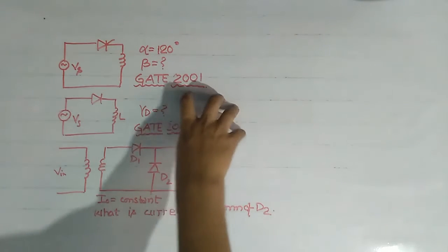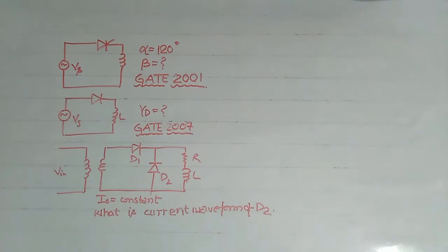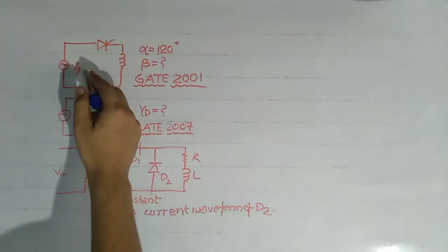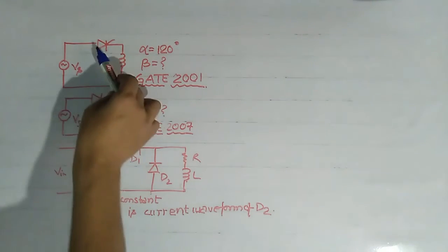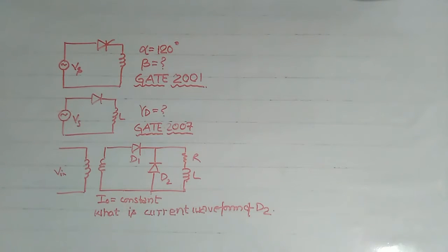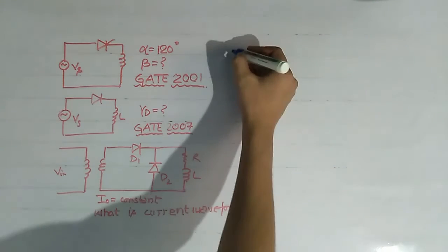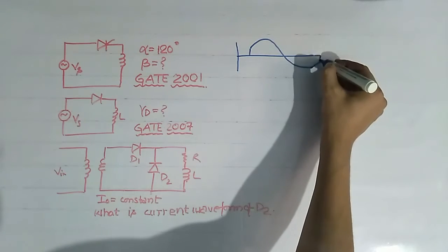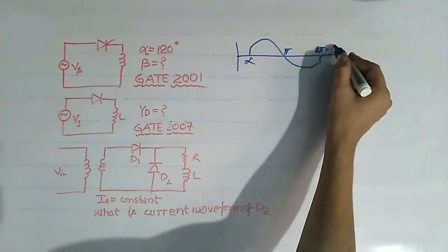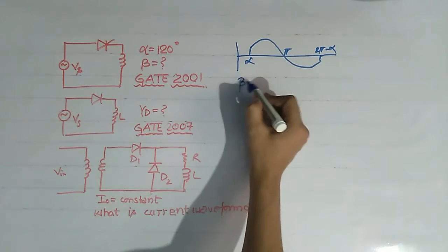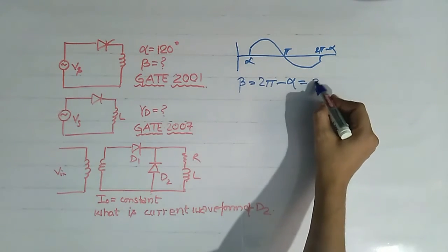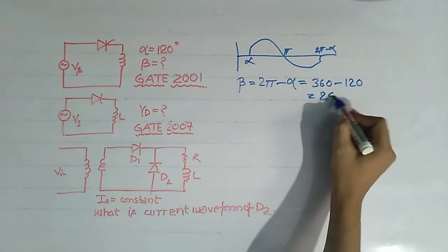This question was asked in GATE 2001. The circuit is given and the question asks: what is the excitation angle beta? Here VS is a sinusoidal voltage source, this is a thyristor, and this is an inductor — so this is a one phase half wave uncontrolled rectifier with L load. For an uncontrolled rectifier, beta equals 2pi minus alpha. With alpha equal to 120 degrees, we get 360 minus 120, which equals 240 degrees.